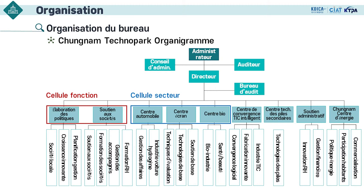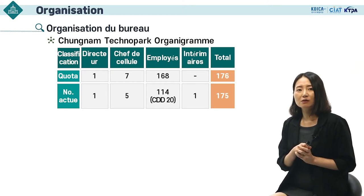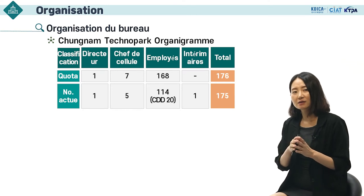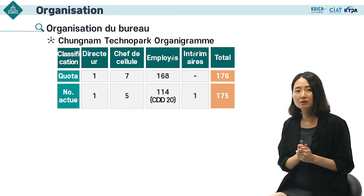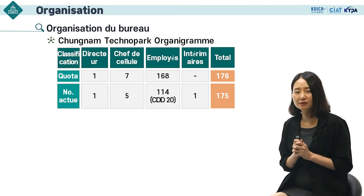Au-dessous, il y a le directeur qui gère réellement l'organisation. Chungnam Technoparc a de nombreuses équipes, plus de dix. Les cellules de l'élaboration des politiques et du soutien aux sociétés sont les cellules fonctions. Du centre automobile au centre de technologie, les piles secondaires sont des cellules secteurs. Nous gérons le personnel en comparant le quota avec le nombre actuel. Nous avons actuellement 175 membres, y compris le directeur, les chefs de cellules, les employés et les intérimaires.